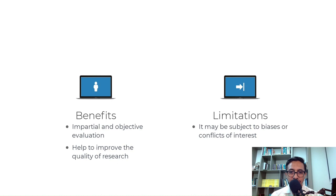Limitations of traditional peer review include that it can be slow and time-consuming, it may not identify all flaws in research, and it may be subject to biases or conflicts of interest.